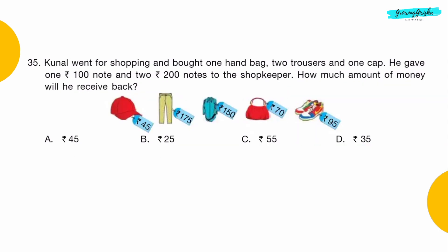Question 35: Kunal went for shopping and bought 1 handbag, 2 trousers and 1 cap. He gave 1 rupees 100 note and 2 rupees 200 notes to the shopkeeper. How much amount of money will he receive back? Option D: Rs. 35.